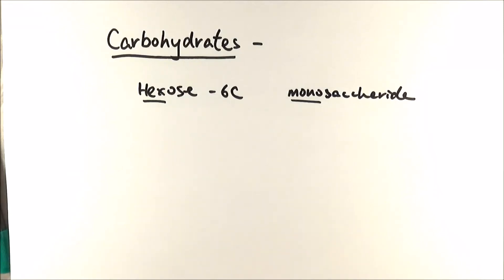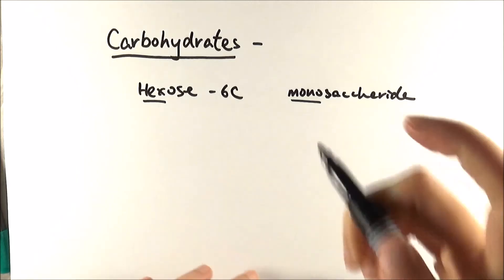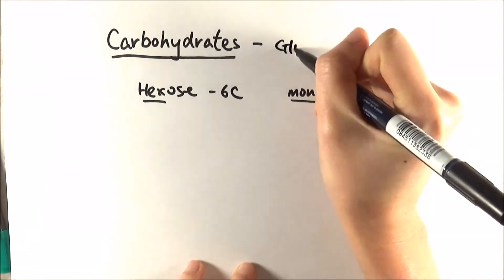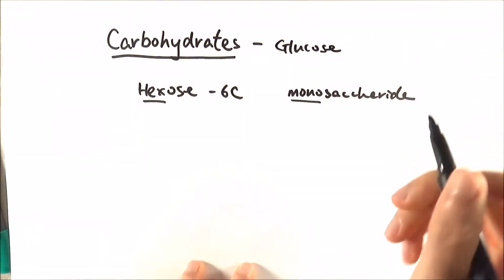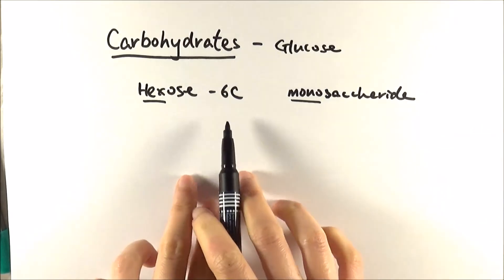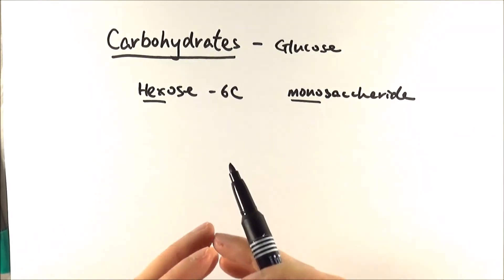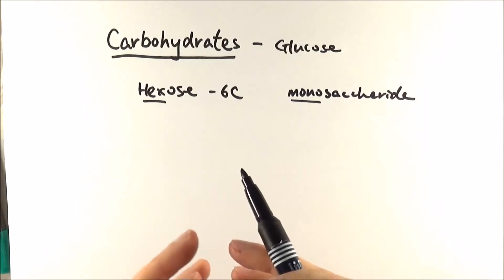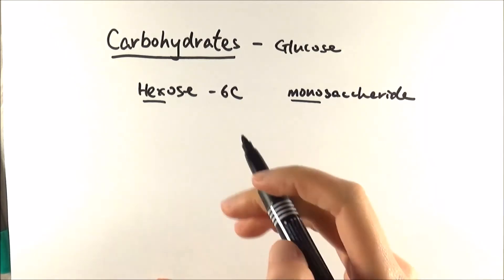Hello everybody, in today's video we'll be thinking about carbohydrates and specifically glucose. Now glucose is what we call a hexose monosaccharide, hexose meaning six carbon, and glucose exists on its own in a six carbon compound.